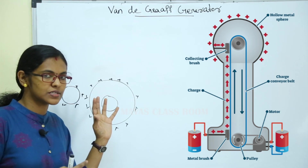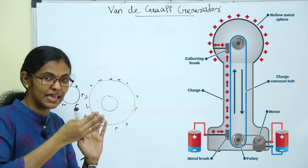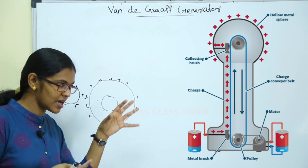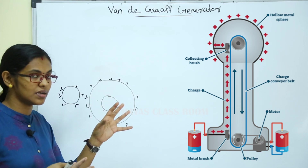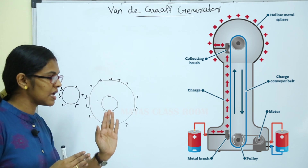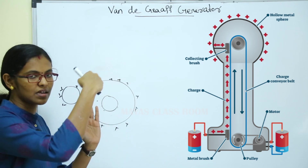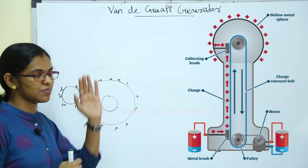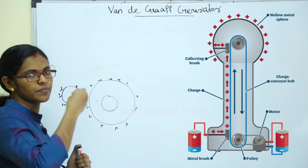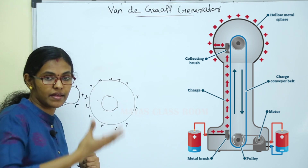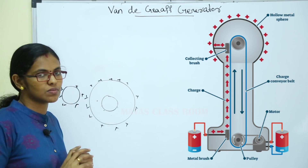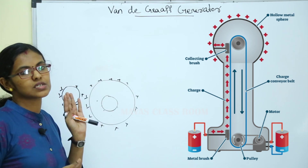If you have a positive charge in the air, the air is ionized and you will be able to neutralize the electrons. The positive charge in the air neutralizes the electrons. If you have electrons in the air and they are ionized, the positive charge will neutralize those electrons.